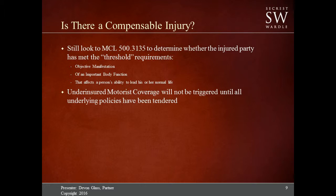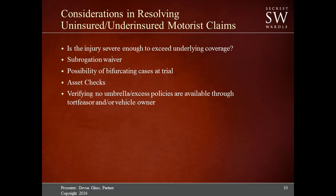The underinsured claim won't be triggered until all of the underlying policies have been tendered. So if there's a policy for the driver, a policy for the owner, and an underinsured policy after that, both underlying policies would need to tender their policy limits before the underinsured policy would be available to your insured. When looking at resolving an uninsured or underinsured claim, you want to see if their injury meets the threshold described. If they broke their pinky and there's not much else impacting their normal life, they may not meet or exceed the underlying coverage for a $20,000 policy.